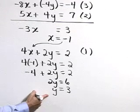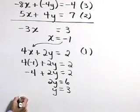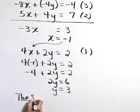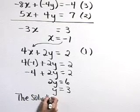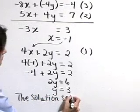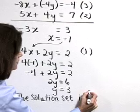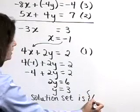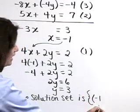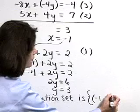So we've solved for both x and y. Let's summarize by saying the solution set is the point where x is equal to negative 1 and y is equal to 3.